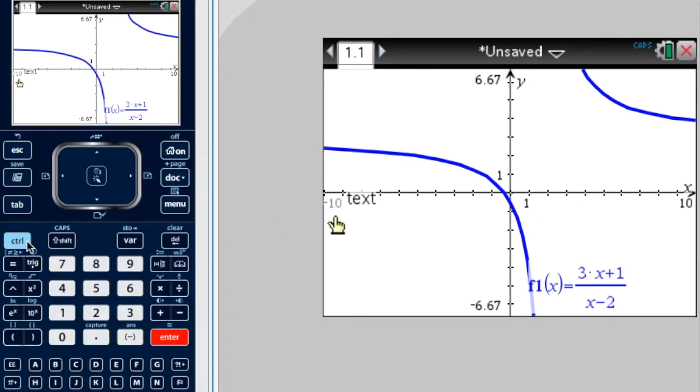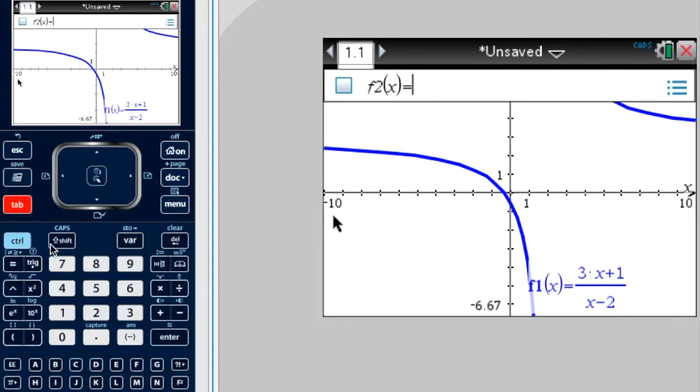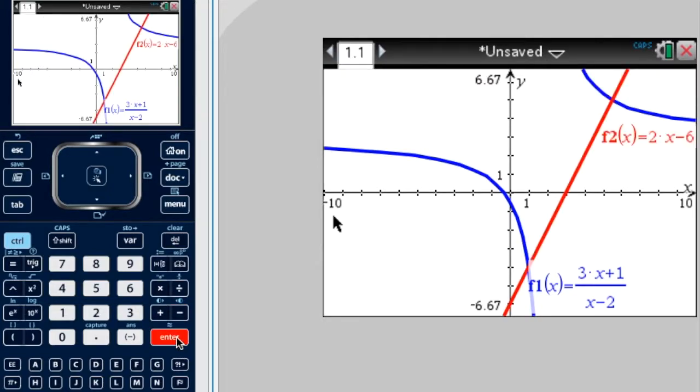Now we'll press tab again and do the other one which is 2x minus 6. Enter. So we've graphed both sides of our inequality.